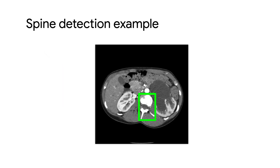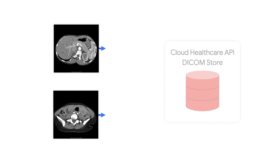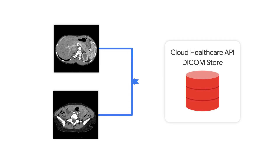Let's take a look at an example of how the Cloud Healthcare API can be used to build a spine detection machine learning model using a small set of DICOM CT images. First, images are ingested into a DICOM store. A data store is simply a place to store a certain type of healthcare data, so a DICOM store is a place to store DICOM medical images.